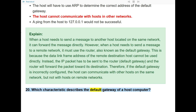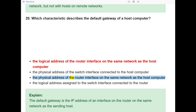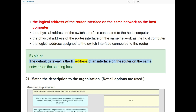Question 20: Which characteristic describes the default gateway of a host computer? The answer is: the logical address of the router interface on the same network as the host computer. The default gateway is the IP address of an interface on the router on the same network as the sending host.